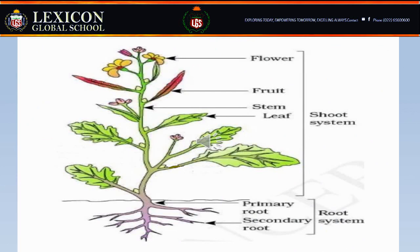The plant is divided into two main parts. The part of the plant growing above the ground or soil is called the shoot system. It includes flower, fruit, stem, and leaf. The part of the plant growing below the soil is called the root system. Now one by one we are going to look at the function of each part of the plant, starting with the root.